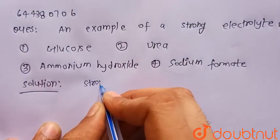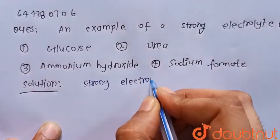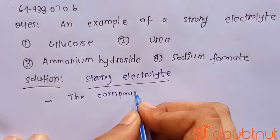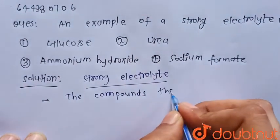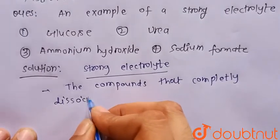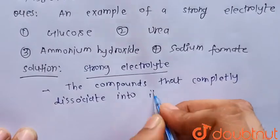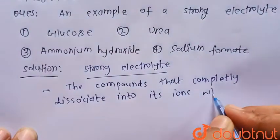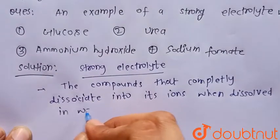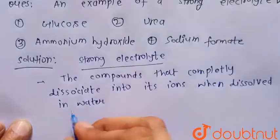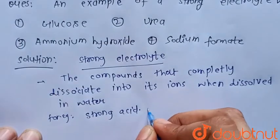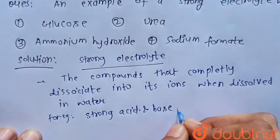First, we have to define what strong electrolytes are. The compounds that completely dissociate into their ions when dissolved in water are called strong electrolytes. For example, strong acids and bases and some salts.